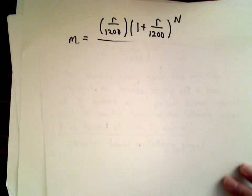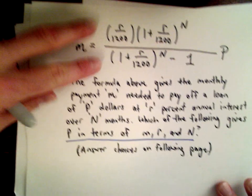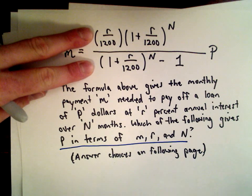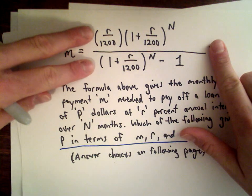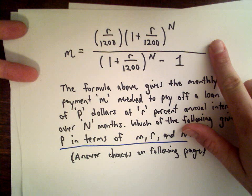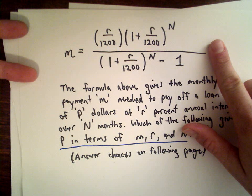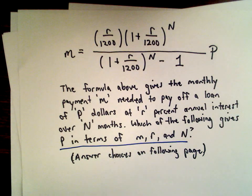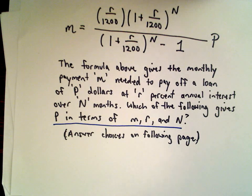So again, to make a long story short, all that you have to do for this one is you just take this original, okay, forget about the P for a second. Take this original fraction and you just multiply by the flip of it on the left. And that gives you your solution.